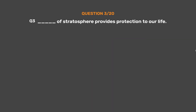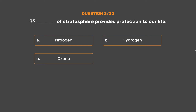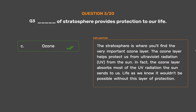Question number three: the ozone layer of the stratosphere provides protection to our life. The correct answer is option C. The stratosphere is where you'll find the very important ozone layer. The ozone layer helps protect us from ultraviolet radiation (UV) from the sun. In fact, the ozone layer absorbs most of the UV radiation the sun sends to us — life as we know it wouldn't be possible without this layer of protection.